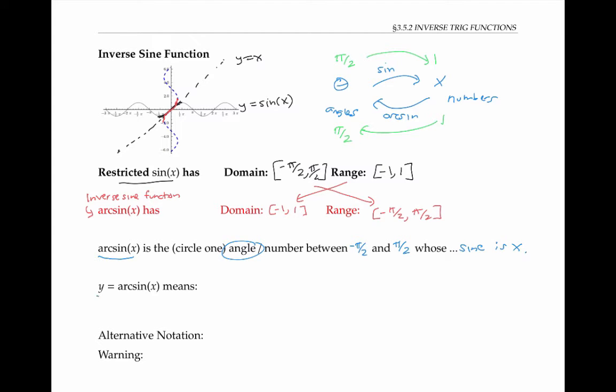Y is equal to arc sine x means that x is equal to sine of y. But since there are many angles y whose sine is x — they all differ by multiples of two pi —